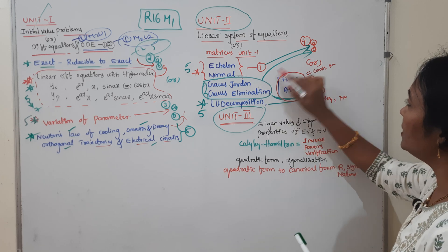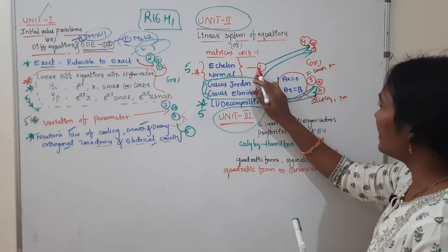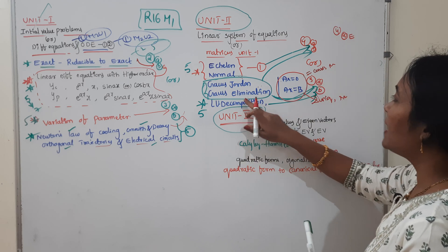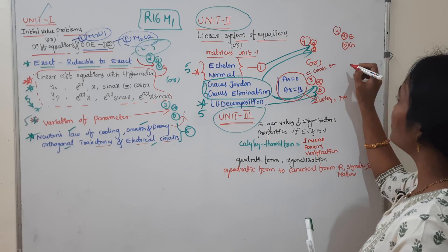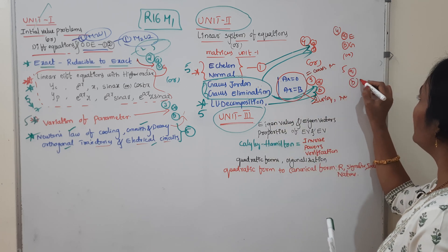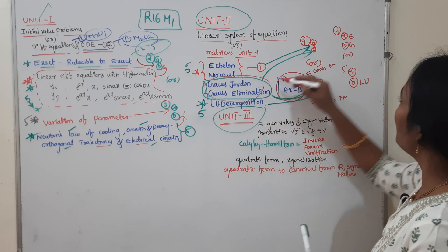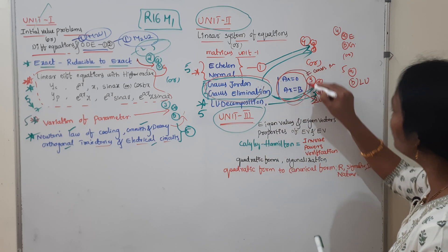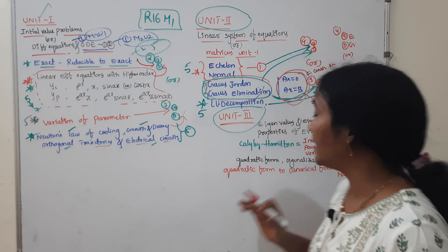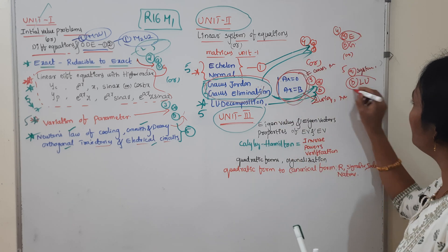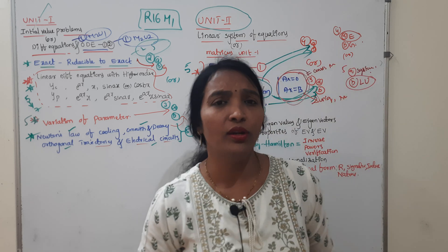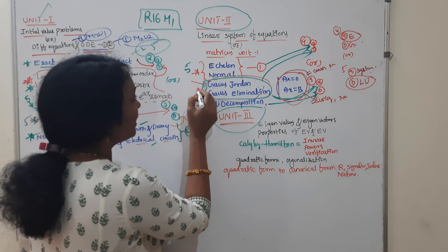If you have to do this, you will have a chance. Where is the Gauss-Jordan? B is the Gauss-Jordan. Then 5A is compulsory. LU decomposition is compulsory — we have to solve this bit. Now we have to solve a system of equations. The Gauss-Jordan is Gauss elimination. The inverse is the system of equations.